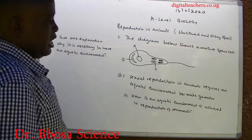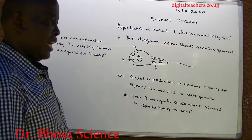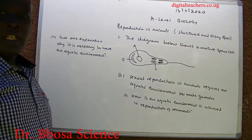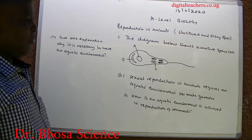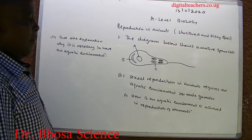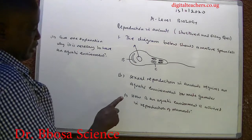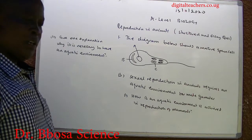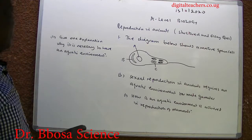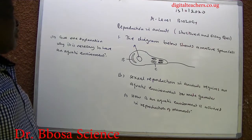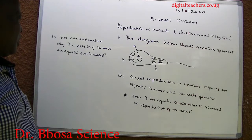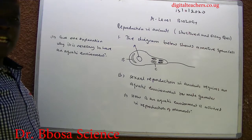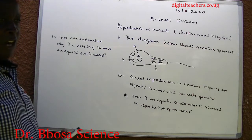B. Sexual reproduction in animals requires an aquatic environment for gametes. 1. How is an aquatic environment achieved in reproduction of mammals? B. Give an explanation of why it is necessary to have an aquatic environment.